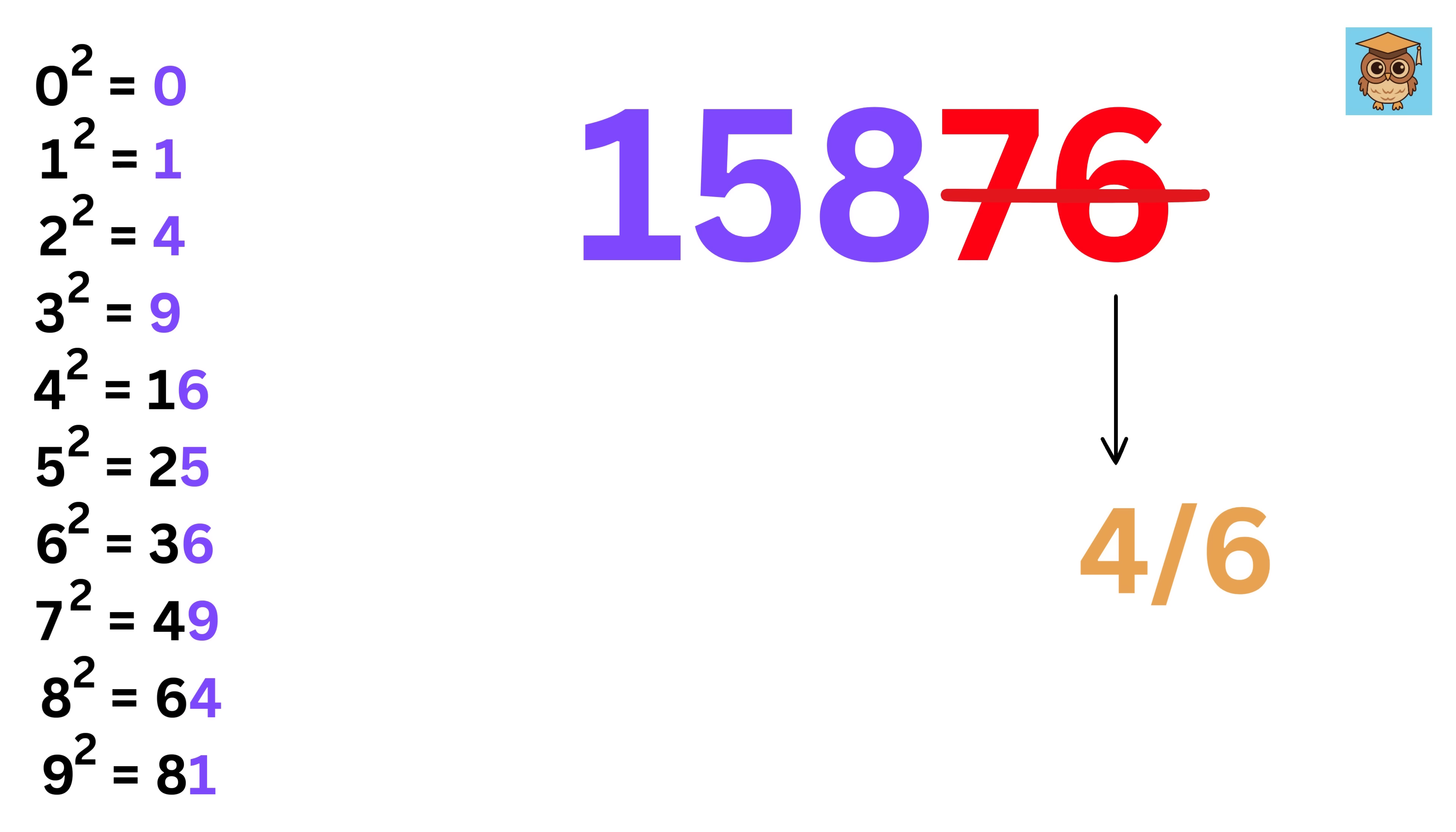Now, find a square which is just below or equal to 158, which is 144 or 12 square. Then, 12 times 13 equals 156. 158 is greater than 156, and thus we choose 6. So, the answer is 126.